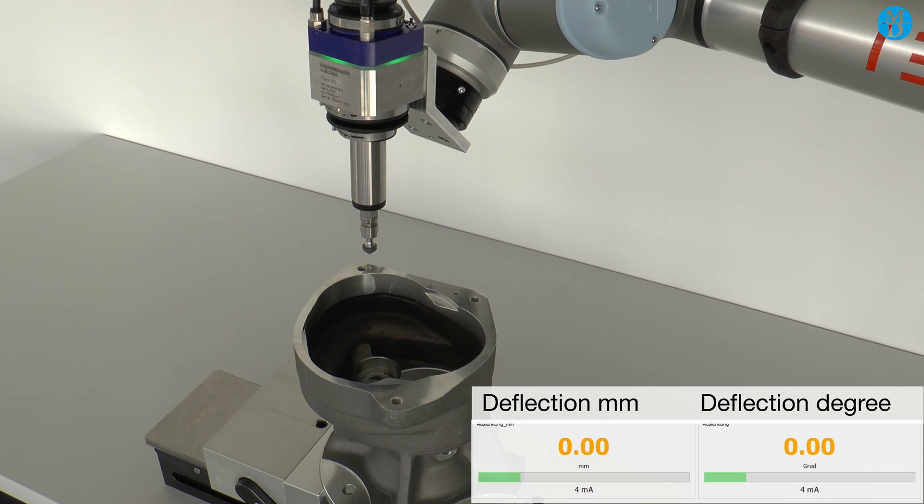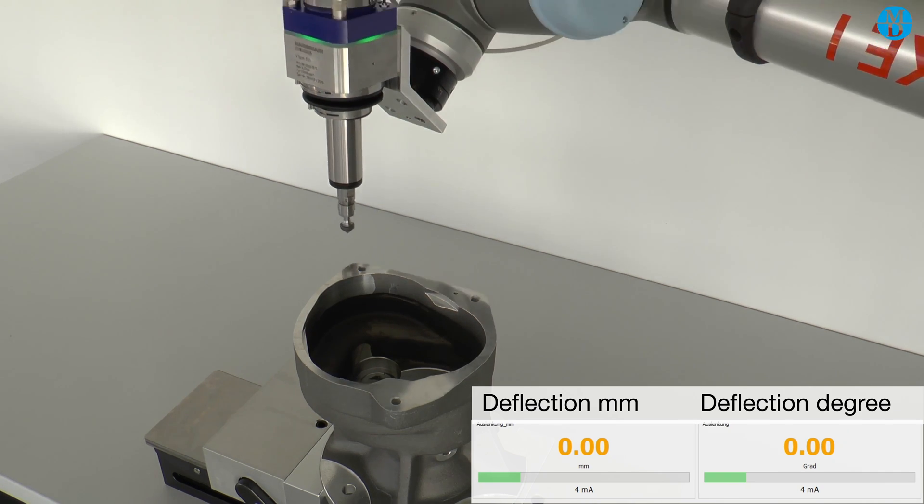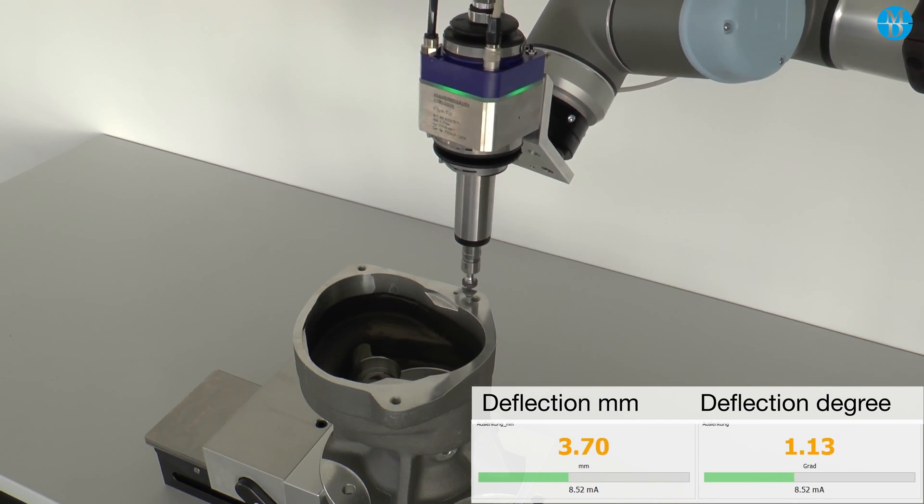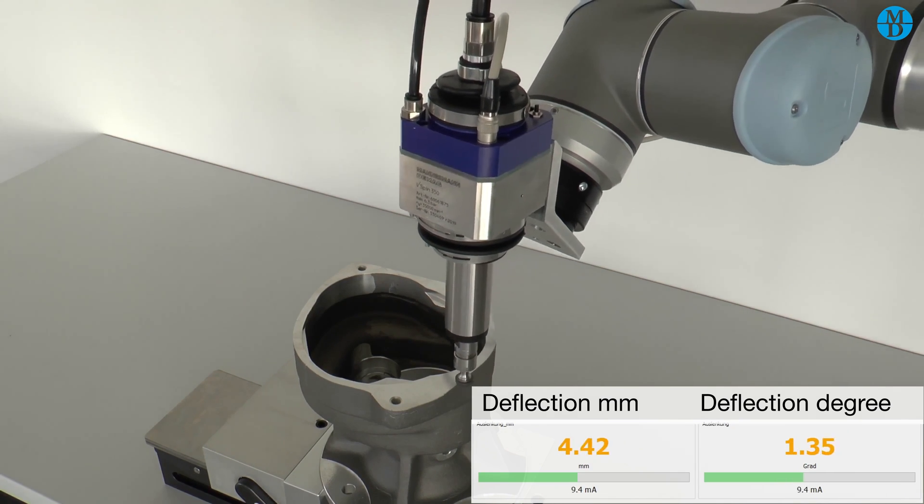So that is basically the teaching process. Now we recommend traveling through all the waypoints again. First, to check that the deflection of the spindle is optimized, and second, to check that the cutting surface of the milling tool is optimized.